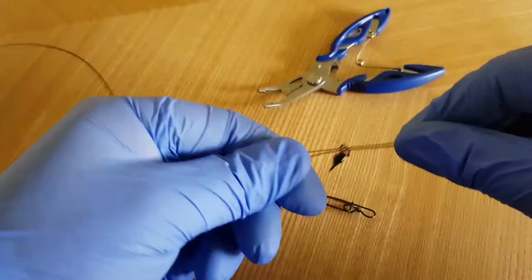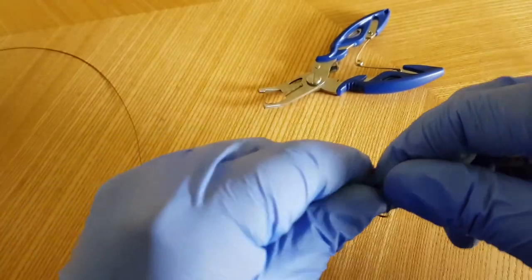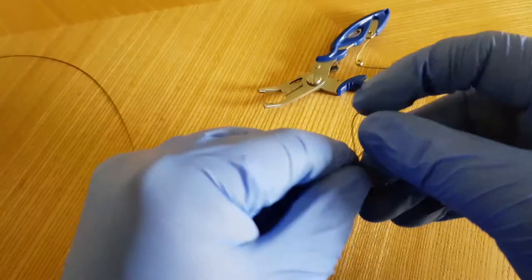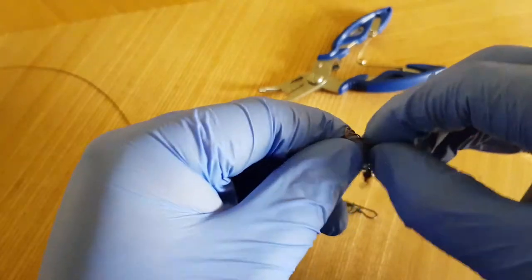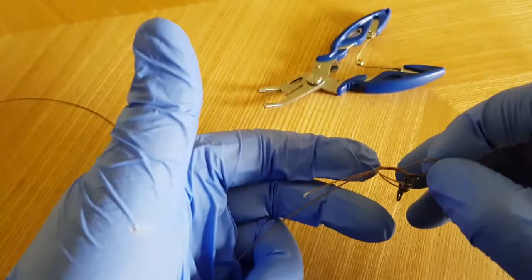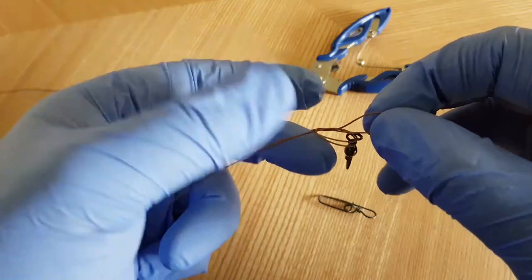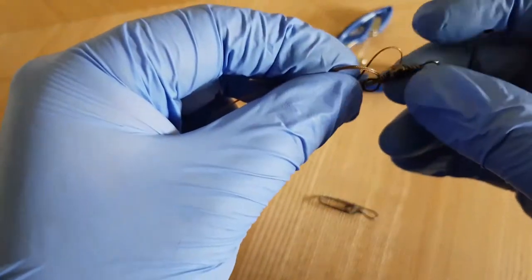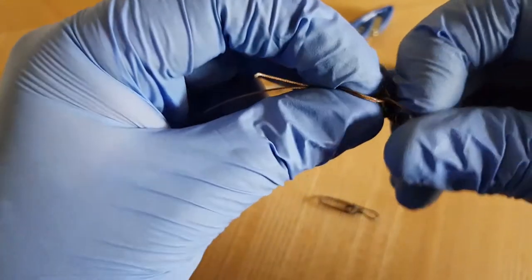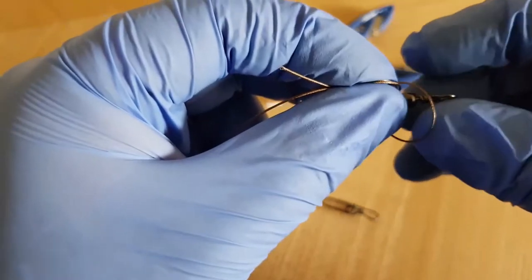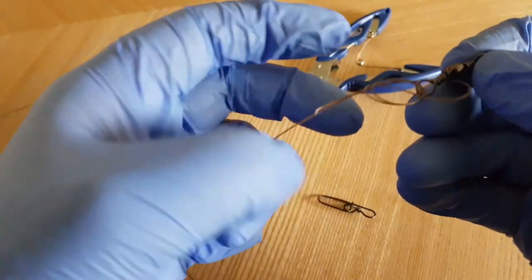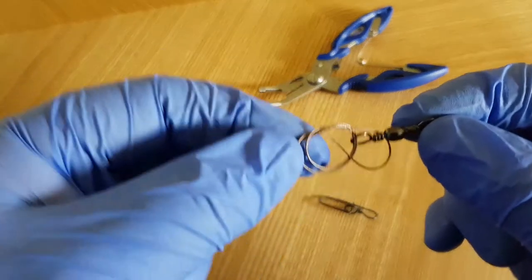Simple overhand knot like you were tying your shoelaces. Push that through. You can see it there. Push the swivel through. It's easier when you're not wearing gloves, I can assure you. You should end up with it looking sort of mid-stage like that.